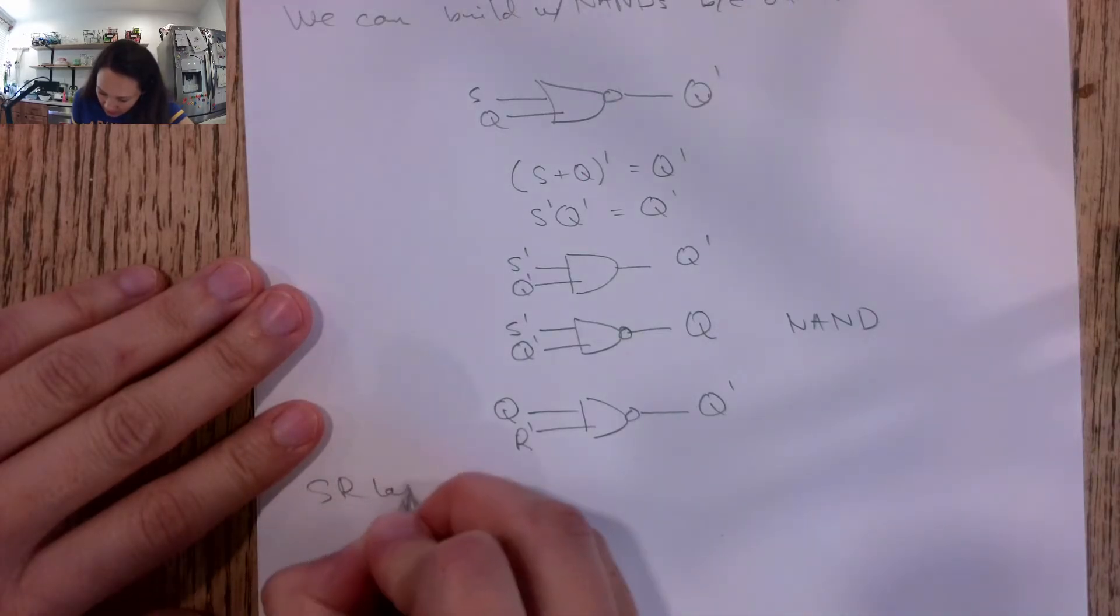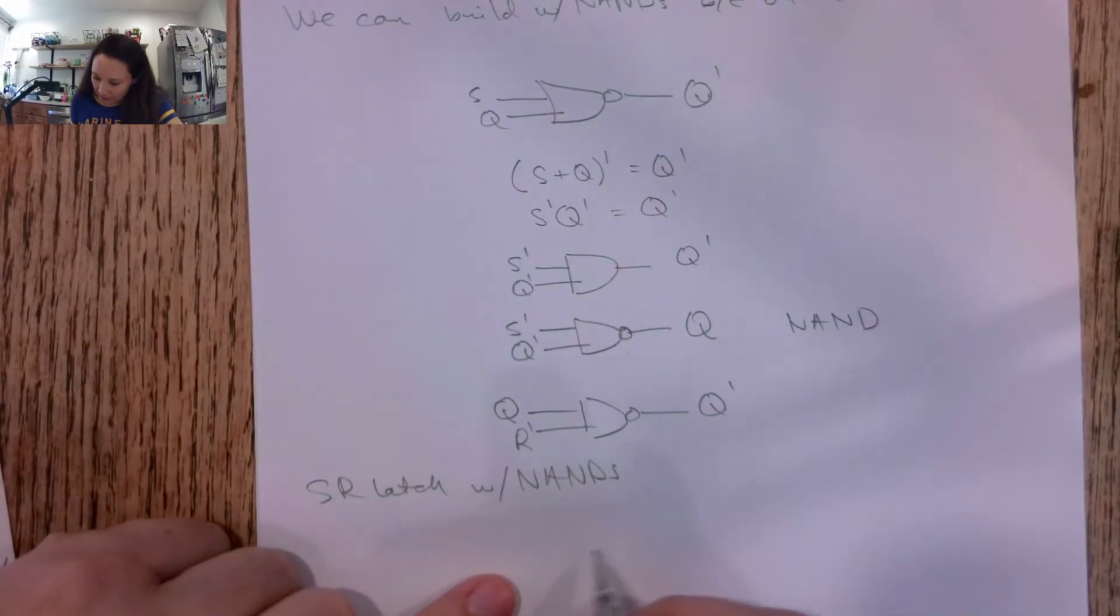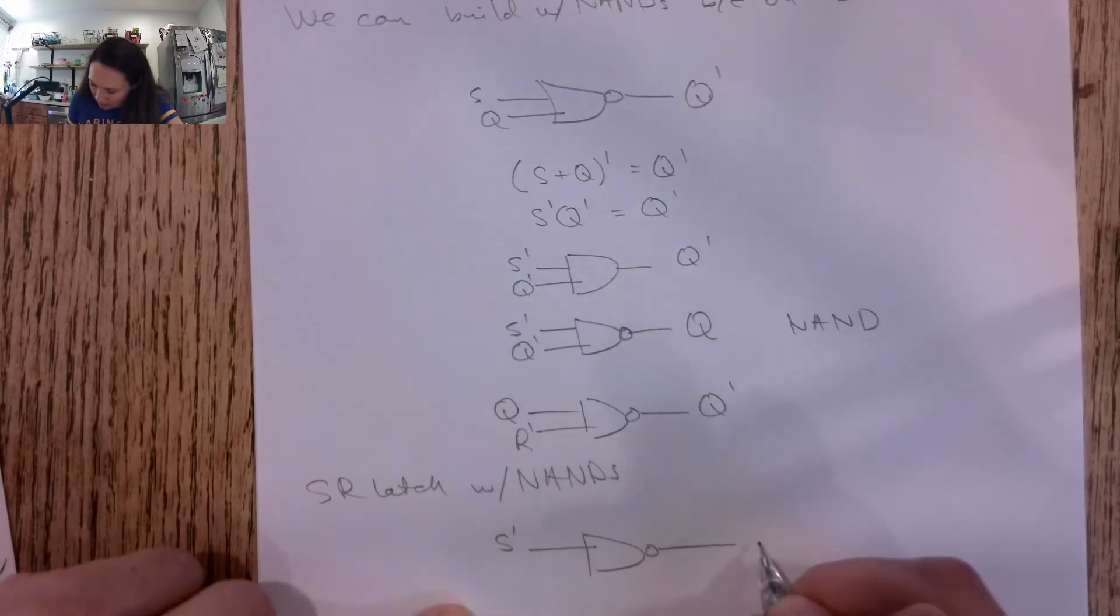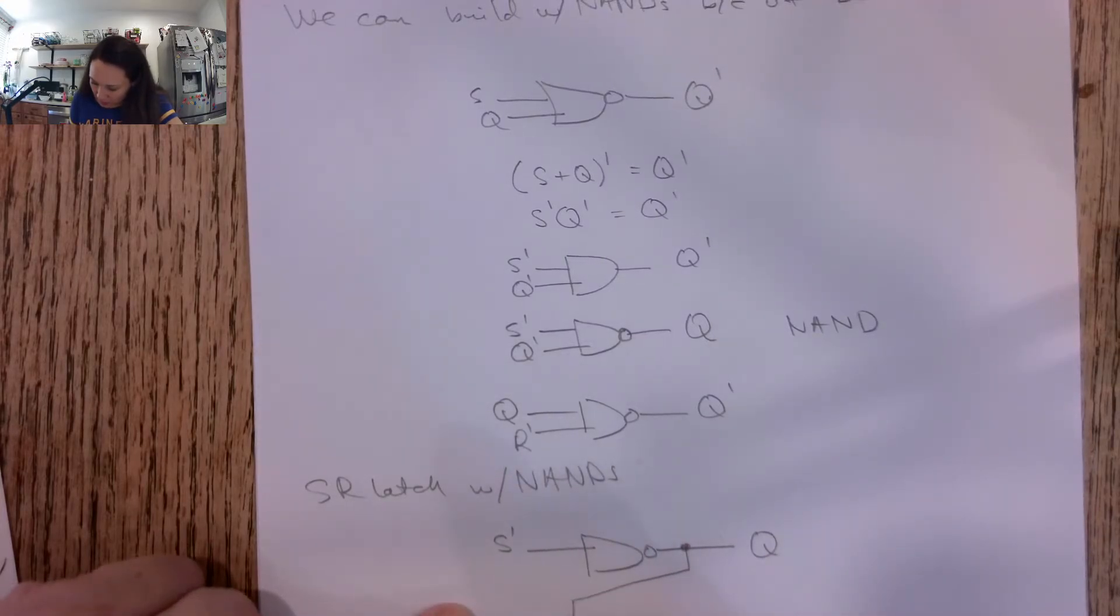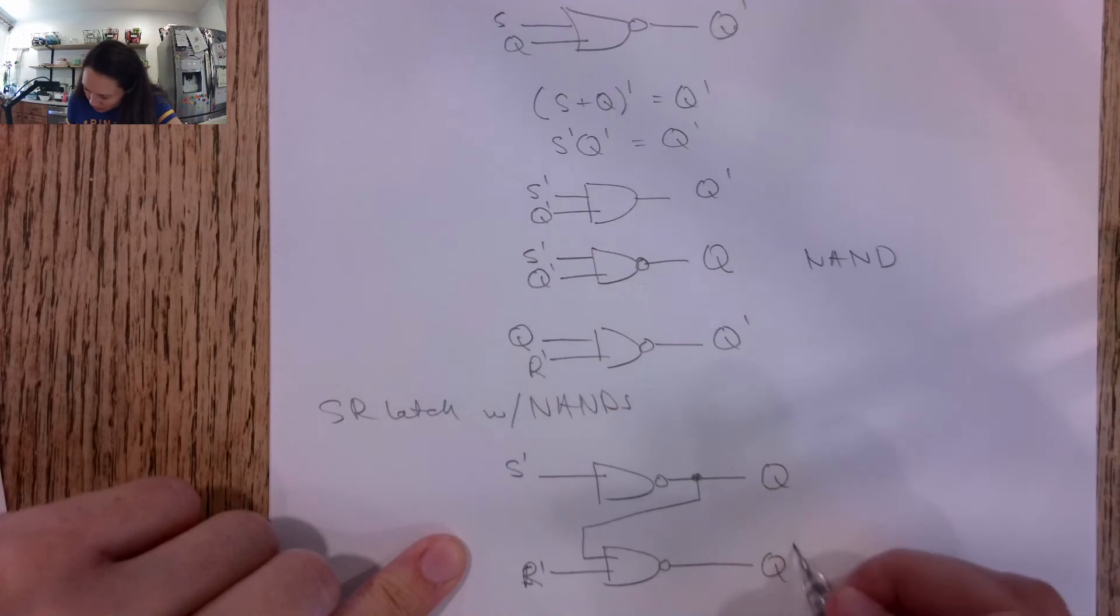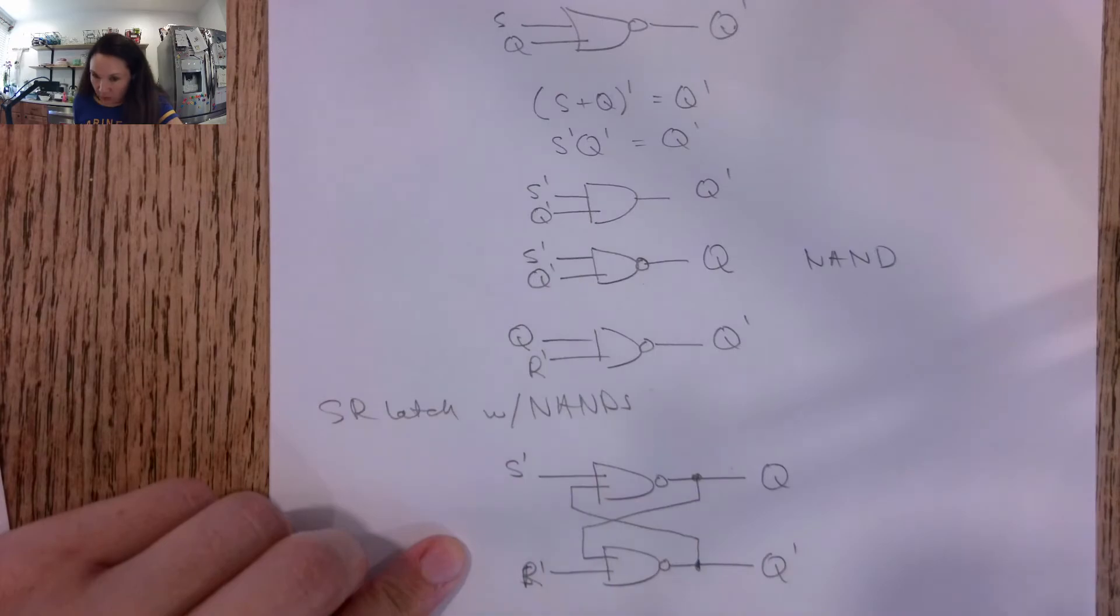then the SR latch with NANDs looks like this. We'll have a NAND - the input to the top NAND is S naught, and the input to the second NAND is R naught. And then the output of this guy is Q naught, and the output of this guy is Q. We make our feedback loops. So Q should be the input to the R naught NAND right there, and Q naught should be the input to the S naught NAND right there.